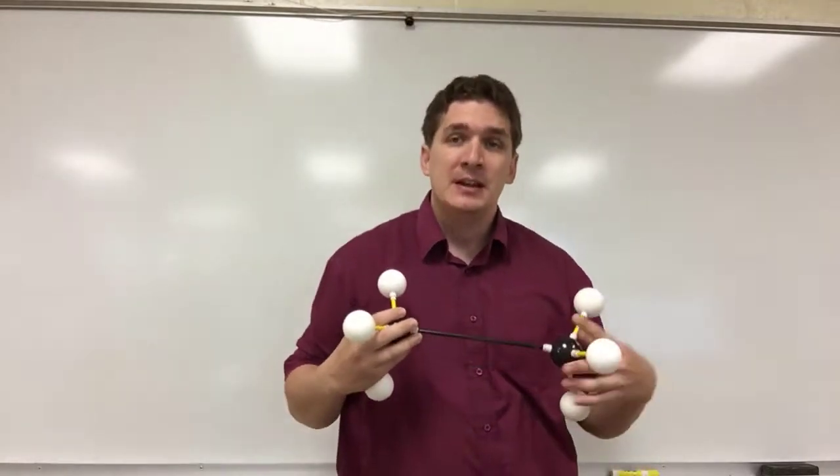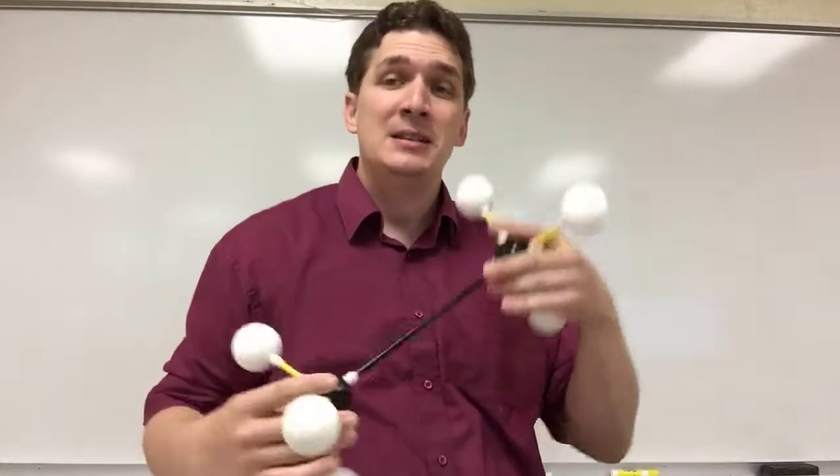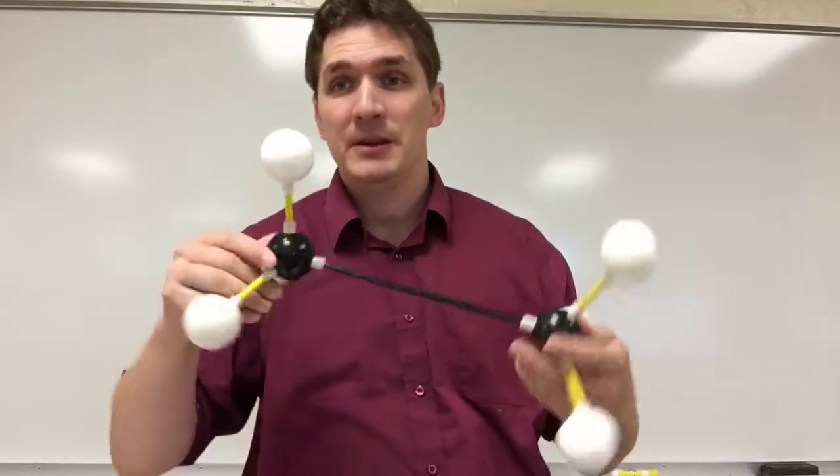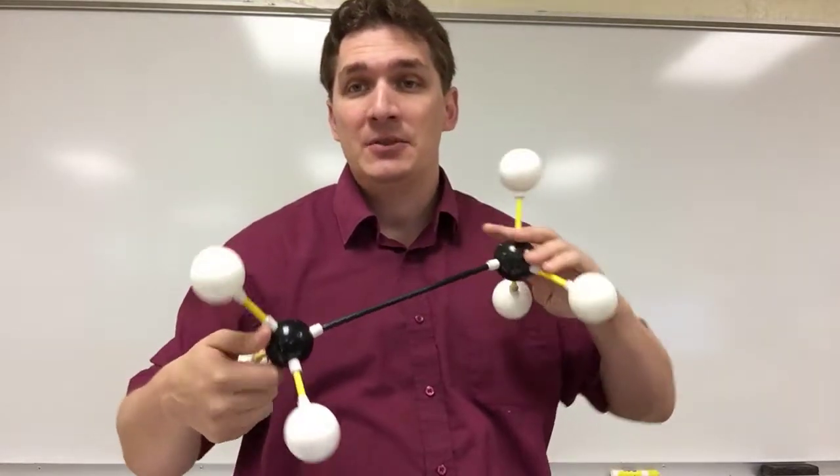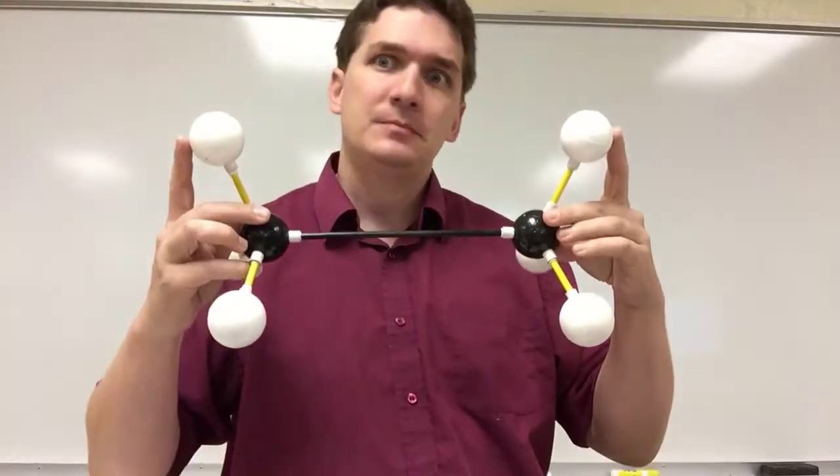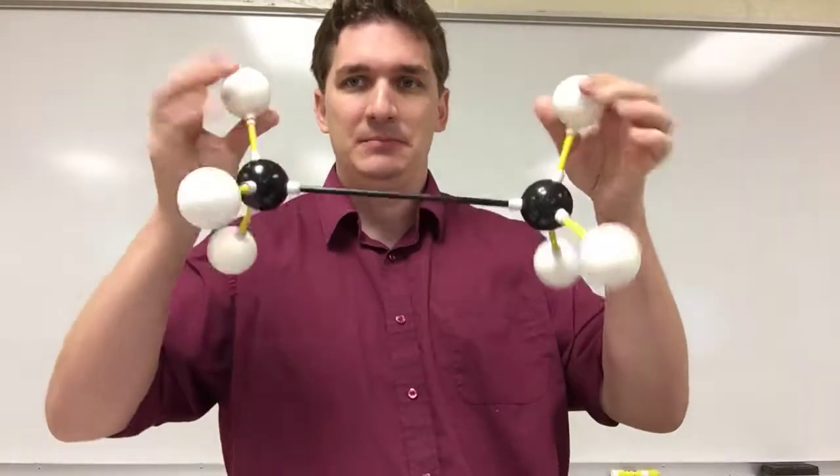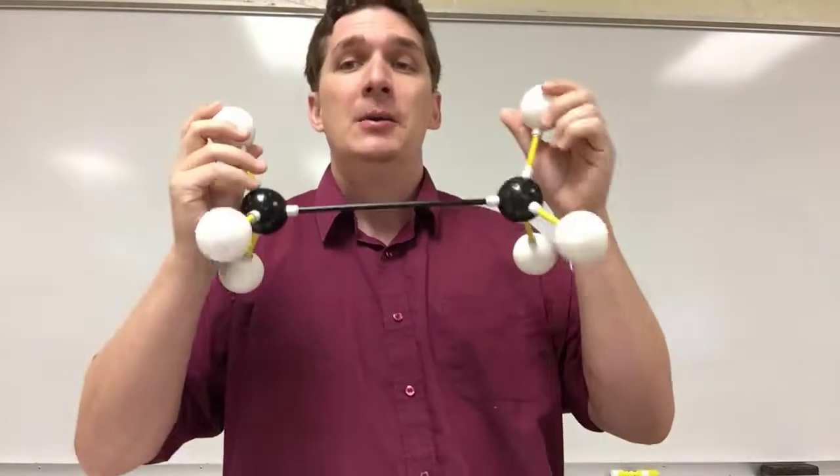So when we look at the physical properties of alkanes, one of the things we see is that the chains tend to be pretty floppy. They can rotate all over the place and they can change their angle, the torsional angle, the angle between these two atoms relative to each other pretty easily.